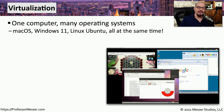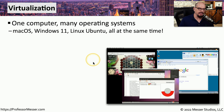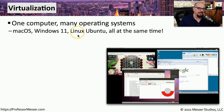Virtualization technology allows us to run multiple operating systems on one single desktop at the same time. For example, you could have a macOS desktop, and on that desktop you're running Windows 11, Linux, Ubuntu, and other operating systems all simultaneously.